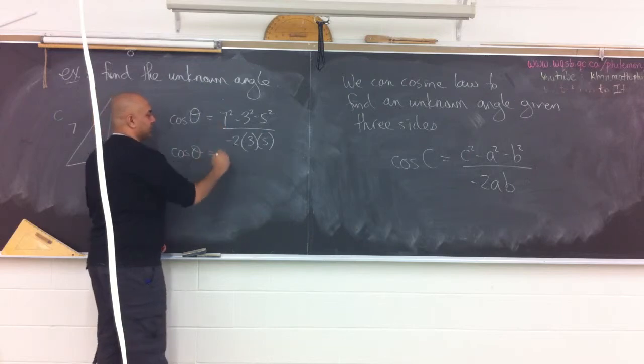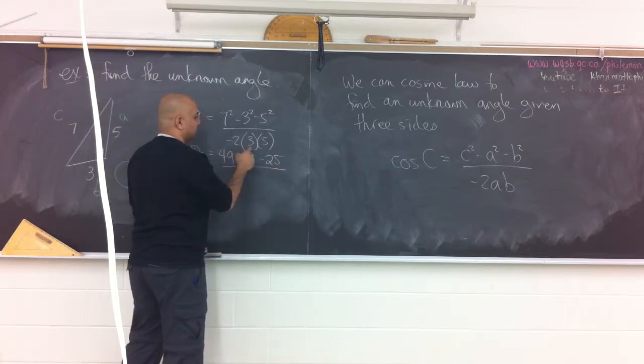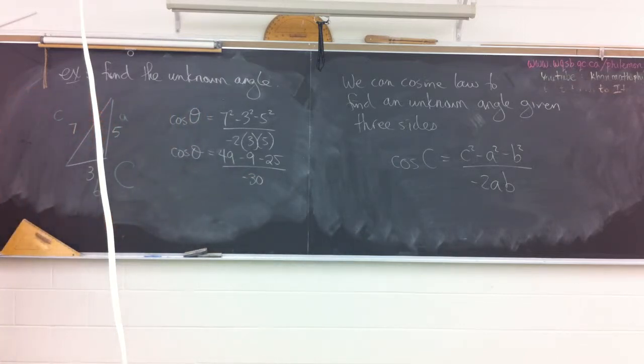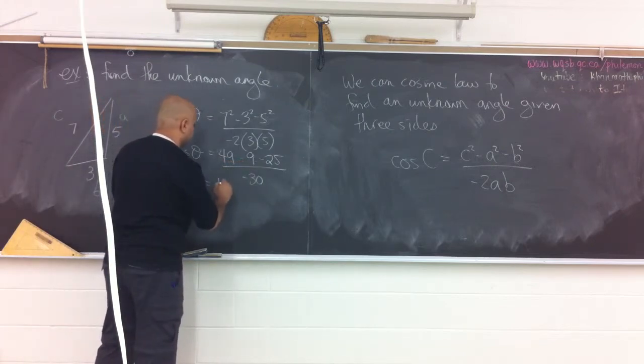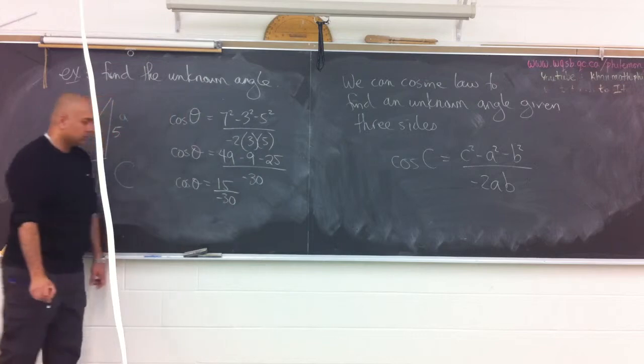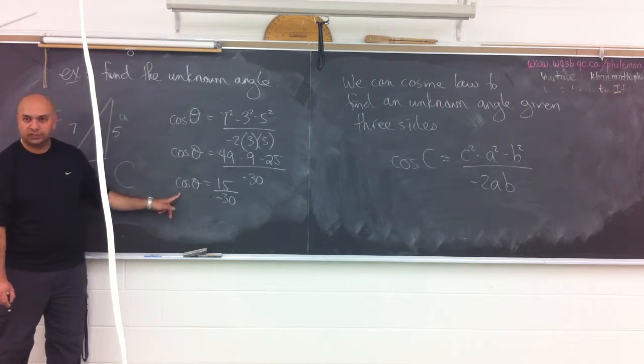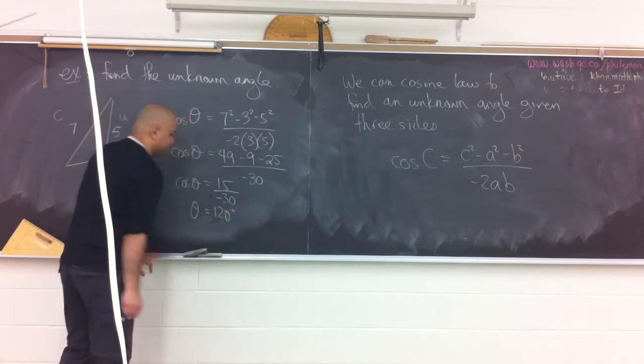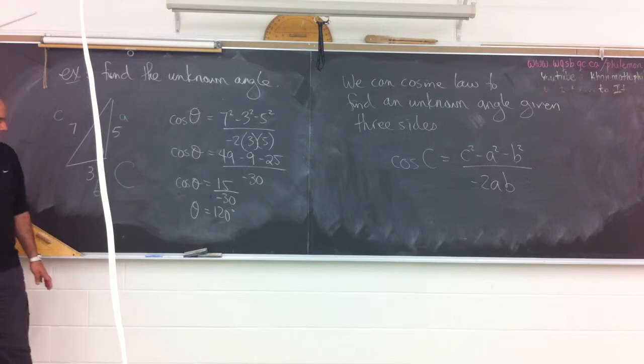I will do this in steps so we can see what's happening. 7 squared is 49. Minus 3 squared is 9. Minus 5 squared is 25. All divided by the bottom. Negative 2 times 3 is negative 6. Times 5 is negative 30. Cosine theta is equal to 49 minus 9, that's 40 minus the 25 is 15. Over negative 30. Nice number. That number right there is negative 1 half. Remember what we're doing though. We're trying to find the angle measurement. So we do the inverse of cosine to bring it to the other side. Which is 120.